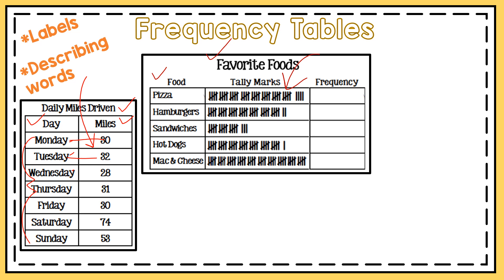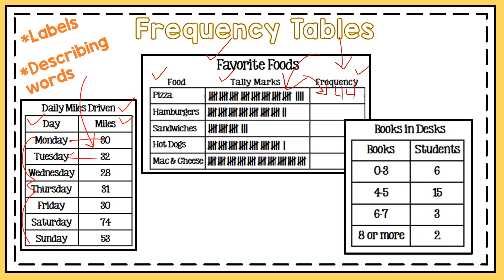This tally frequency table has the title 'Favorite Foods.' Here is a list of your food in one column, and you have tally marks and the frequency in the next columns. You would read the tally mark and then put the frequency in the frequency box. For example, the number of students who liked pizza was 44. On many tables you'll have missing information — in this case the frequency is what's missing and you have to fill that in with the information they gave you.